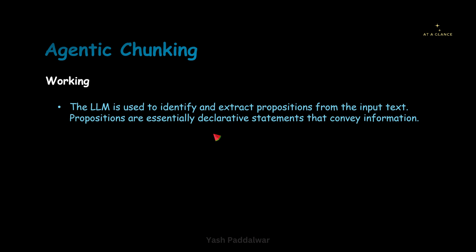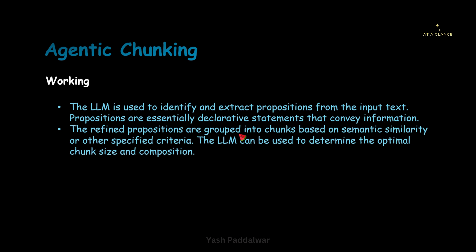Once these propositions are created, these refined propositions are grouped into chunks based on semantic similarity or other specified criteria. This second step is optional and variable — you can use the propositions themselves as chunks, or you can create your custom chunks based on those propositions using any of the chunking strategies we have seen before. You can use recursive character text splitting, semantic similarity, or the large language model itself to determine the optimal chunk size and composition. You can even ask the LLM to create custom chunks and decide the chunk size and composition.